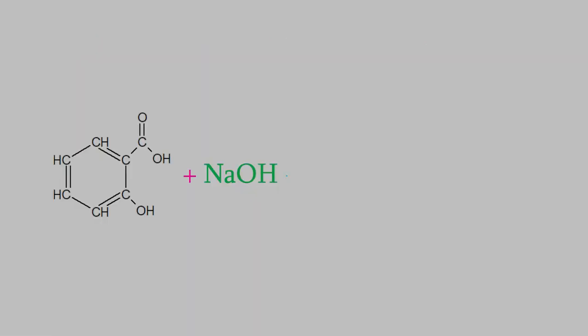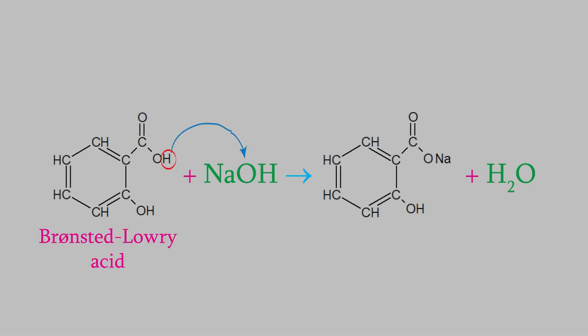For example, here are the acid and base we used as examples just a moment ago. If you look closely at the reaction, you can see that this molecule donates a hydrogen to the sodium hydroxide. That makes this a Bronsted-Lowry acid. Meanwhile, the sodium hydroxide accepts the hydrogen, which makes it a Bronsted-Lowry base.